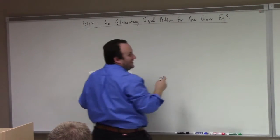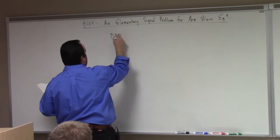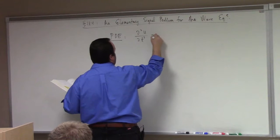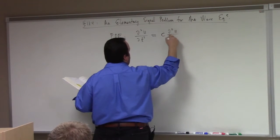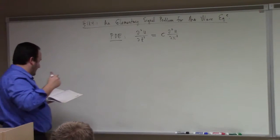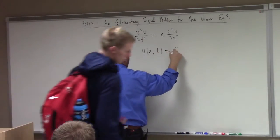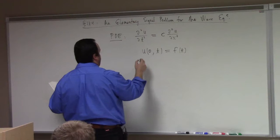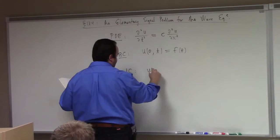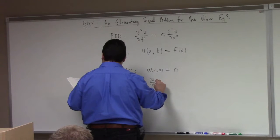The problem — and this is the problem I had last time, and I didn't even post the video because it was too horrible — is just this. We're trying to solve the PDE: partial squared U partial T squared equals C squared partial squared U partial X squared. U of 0, T is equal to F of T — that's our boundary condition. Our initial condition is that U of X, 0 equals 0, and partial U partial T of X, 0 equals 0.